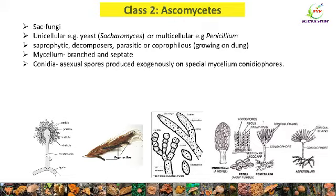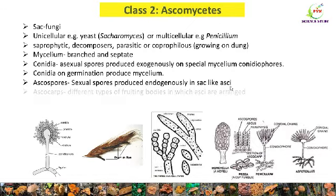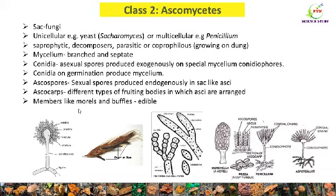On the conidiophore, conidia are produced. On germination, conidia produce fungal mycelium. Ascospores are the sexual spores produced endogenously in sac-like asci. Here you can see the ascus, and inside the ascus ascospores are produced — 8 ascospores are present inside one ascus. In singular it is known as ascus, and in plural they are known as asci. Ascocarps are the fruiting bodies in which asci are arranged. Some members of Ascomycetes, such as morels and truffles, are edible.